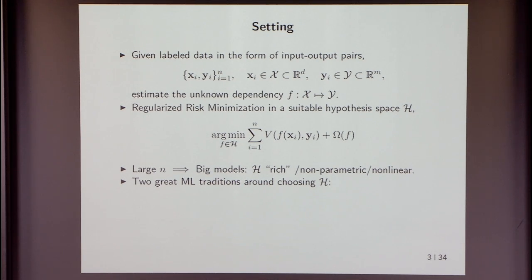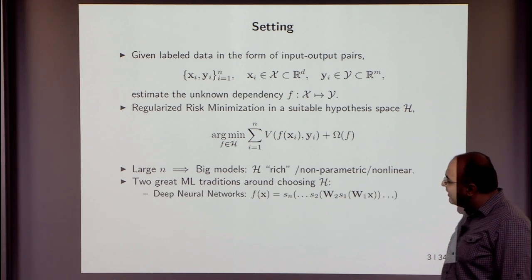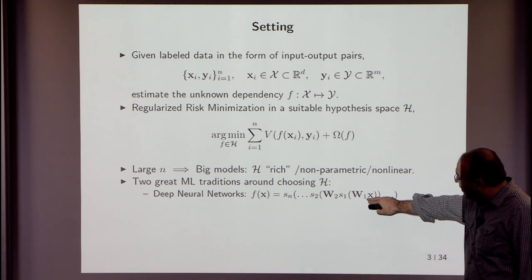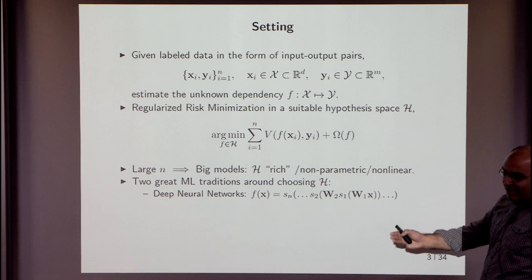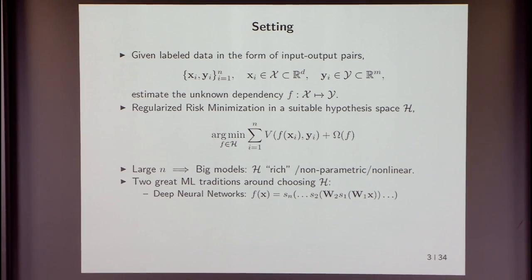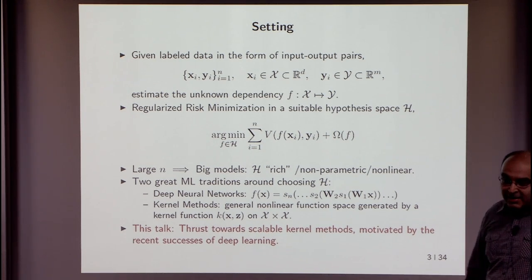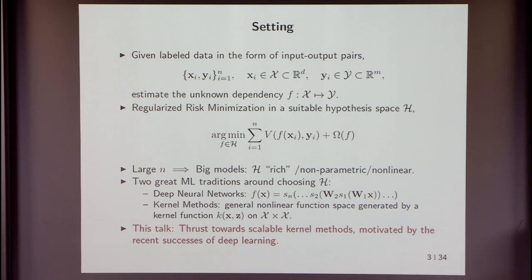In this setting there are at least two great traditions in machine learning. The two I'll focus on are: deep neural nets, where the hypothesis space in the classic multilayer perceptron setting is essentially linear transformations followed by scalar nonlinearities composed together; and kernel methods, where we look for a general nonlinear function space generated by a kernel function on the input domain. This talk is a thrust towards scalable kernel methods motivated by the success of deep learning.